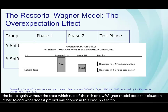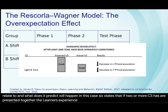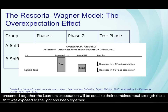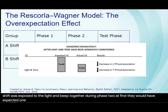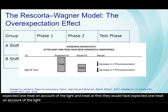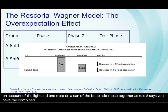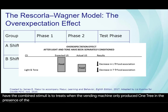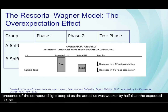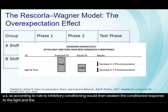Rule number six states that if two or more CSs are presented together, the learner's expectation will be equal to their combined total strength. The A shift was exposed to the light and beep together during phase two. At first, they would have expected one treat on account of the light and one treat on account of the beep. Add those together, as rule six says you should do, and the expected value of the combined stimuli is two treats. When the vending machine only produced one treat in the presence of the compound light-beep CS, the actual US was weaker by half than the expected US. So according to rule two, inhibitory conditioning would then weaken the conditioned response to both the light and the tone, because they're both occurring.